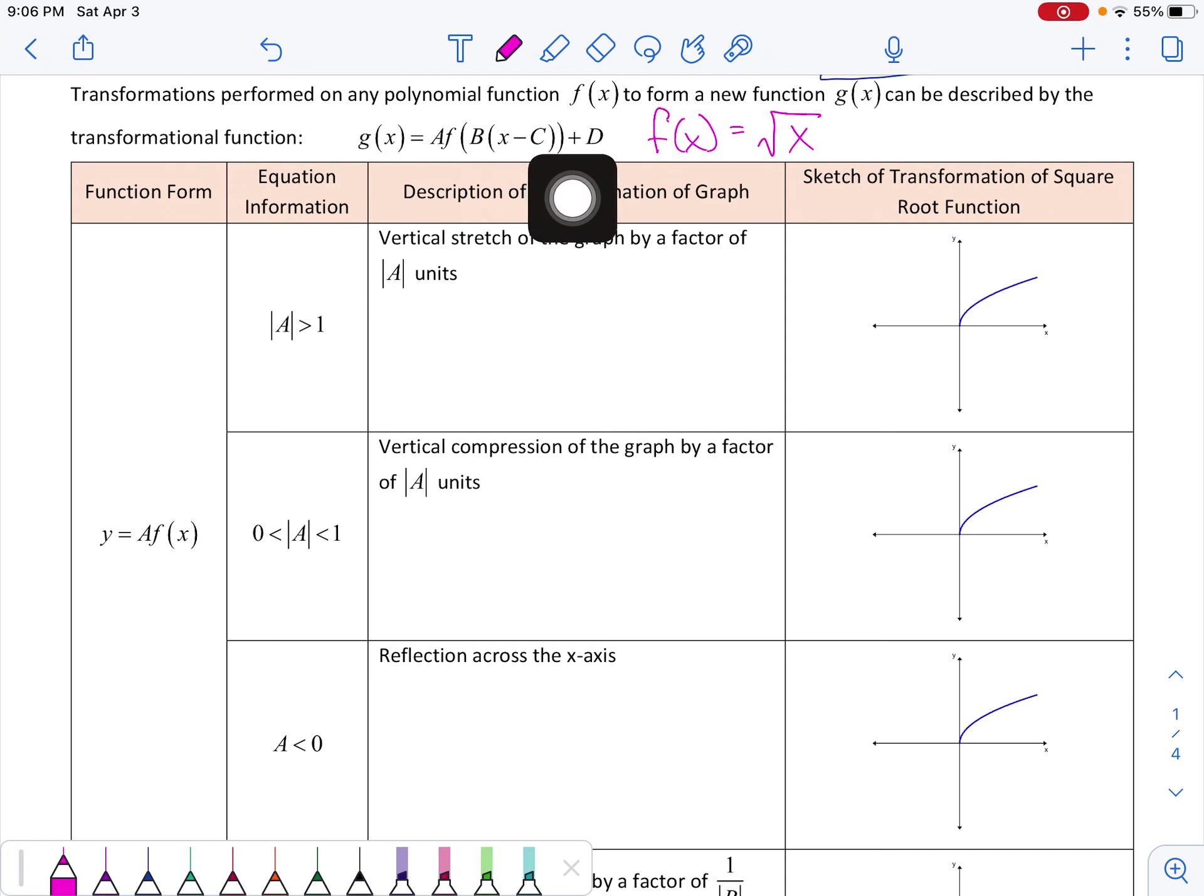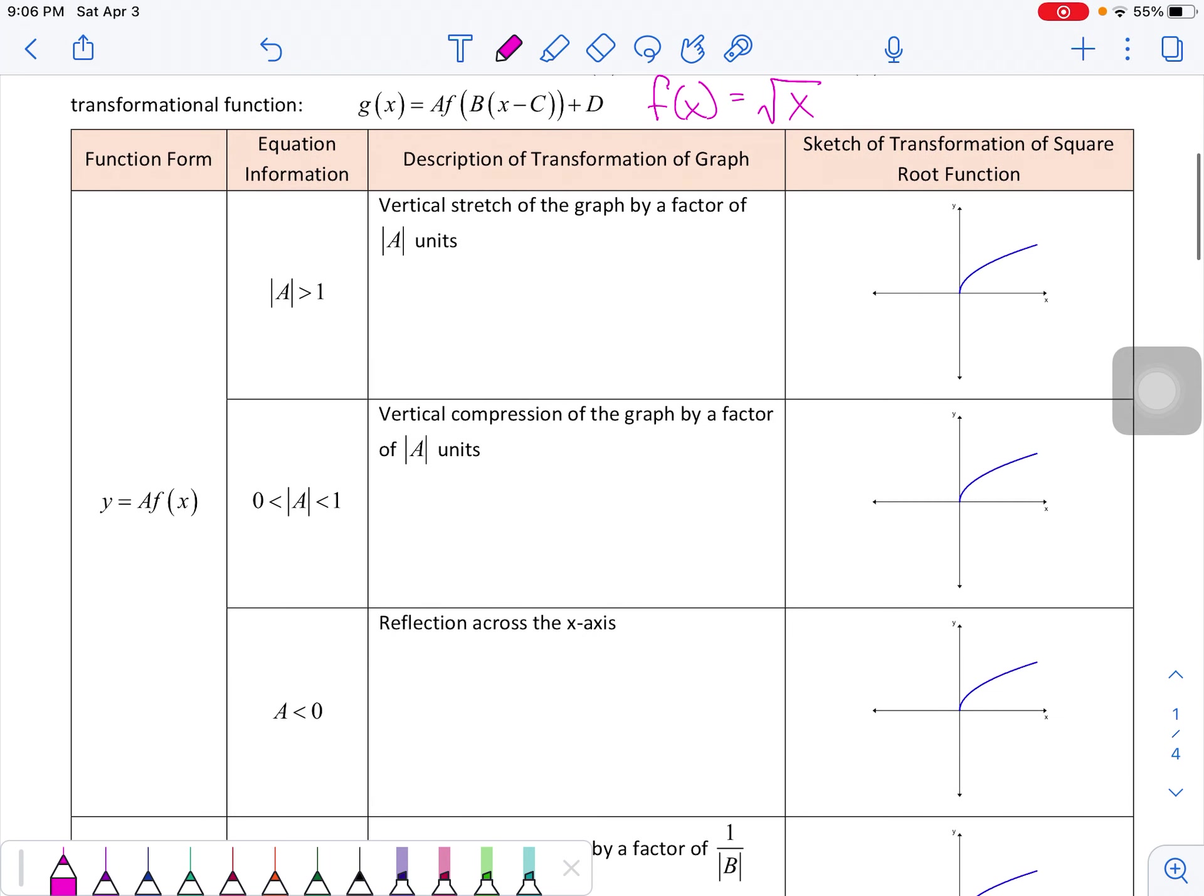We're going to change a, b, c, and d. We're going to talk about what that's going to do to the graph. And in all of these graphs, we're going to sketch the transformed function. Now this is the original, all of these little blue curves right here are the original square root of x graph.